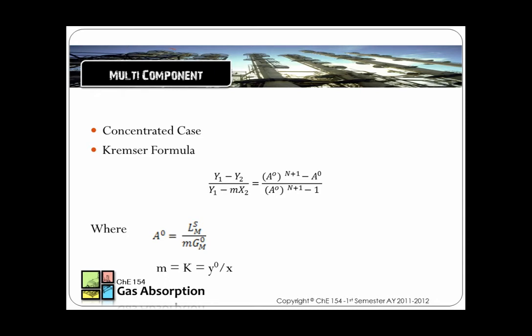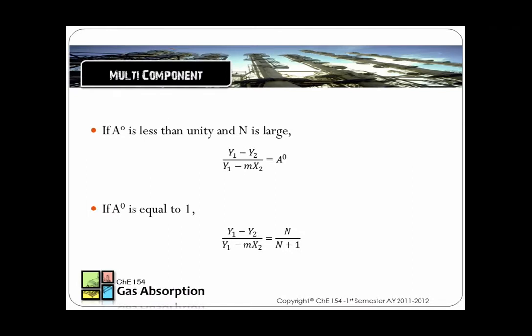For the concentrated case, calculations are more complicated since the change in gas and liquid flow rates within the tower and the heat effects, or delta H, accompanying absorption of all components must be considered. The formulae to be considered include the Kramsler formula, where A is the absorption factor and M is the equilibrium ratio, which equals K and Y0 over X.